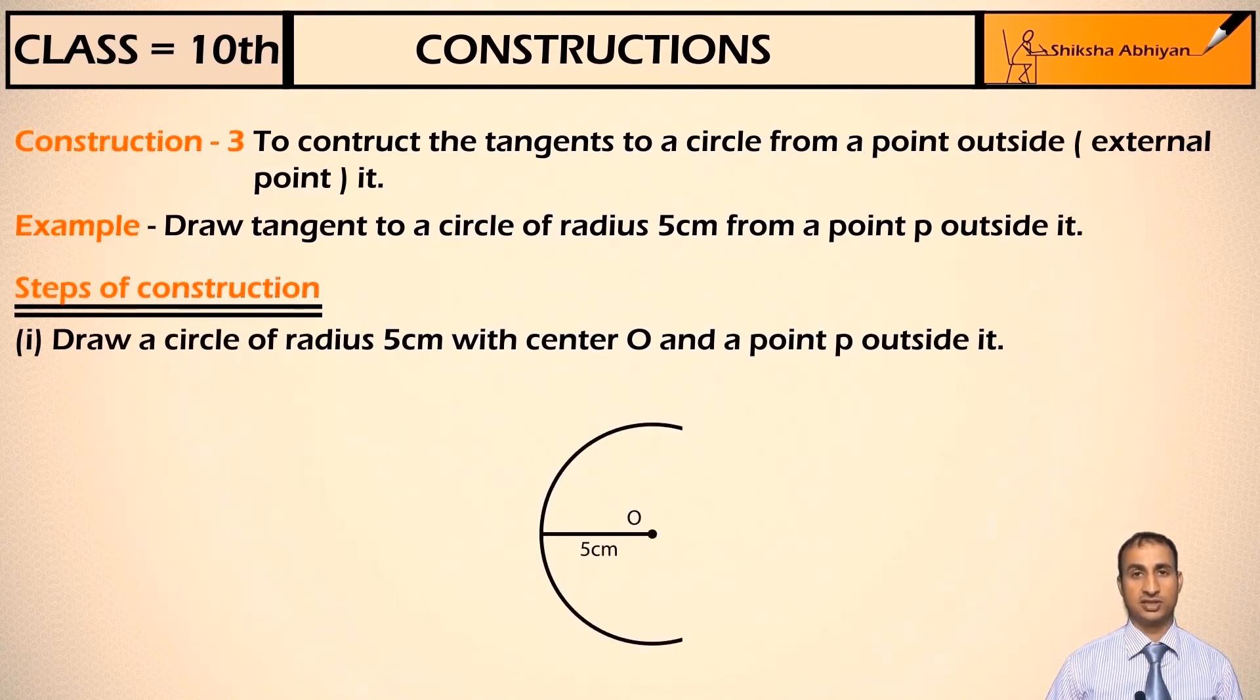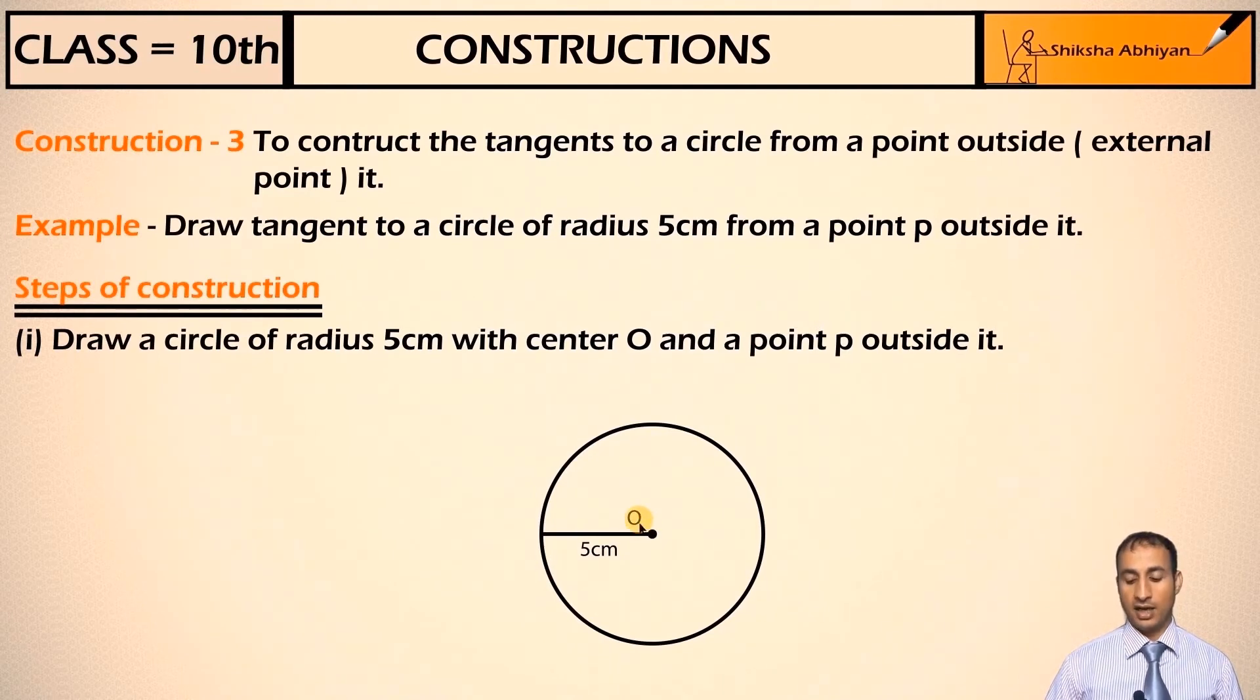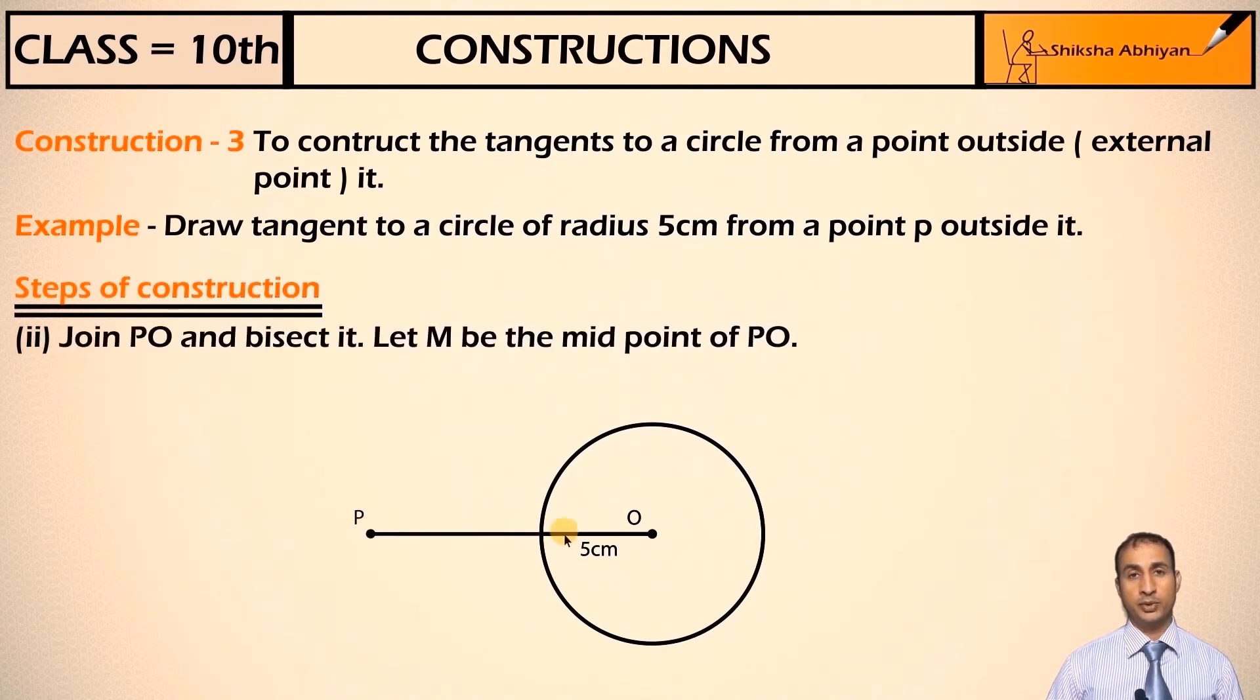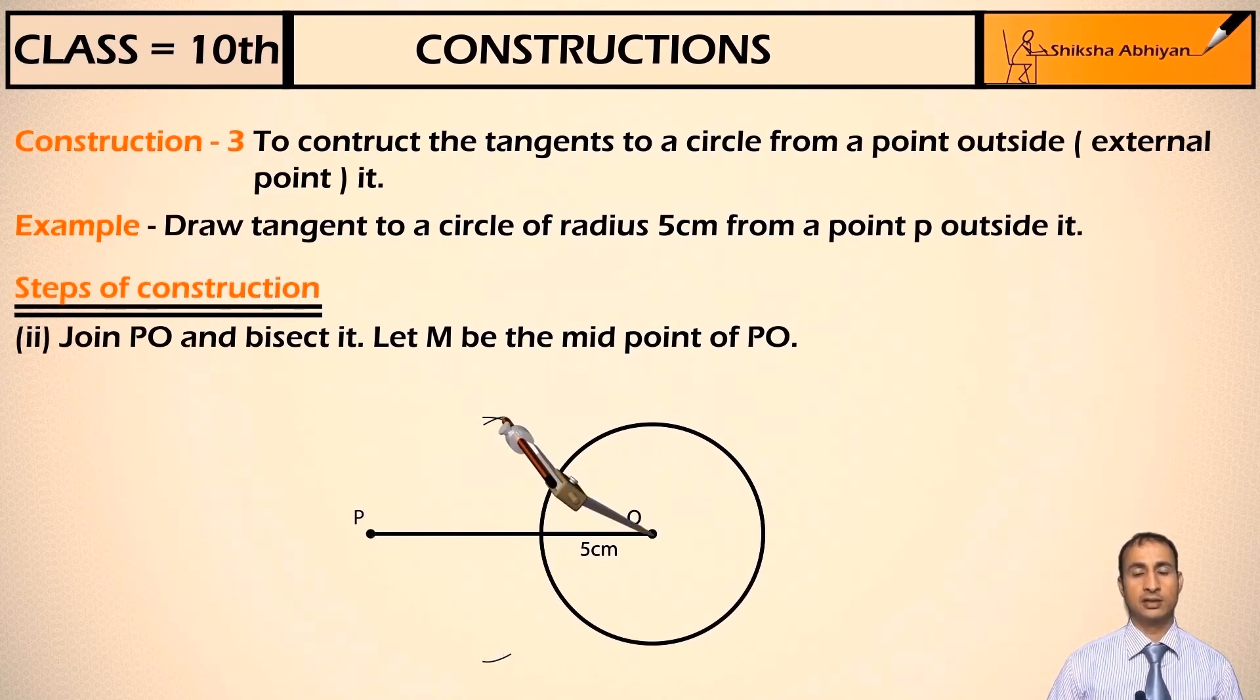This is the circle of radius 5 cm with center O and a point P outside. Now join PO and bisect it. Let M be the midpoint of PO. This is the perpendicular bisector and M is the midpoint.